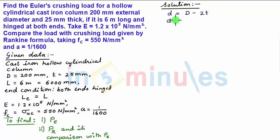So upon substituting the values we get small d is equal to 200 minus 2 times 25 mm, so d is equal to 150 mm.